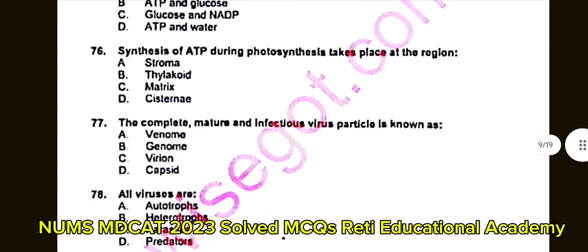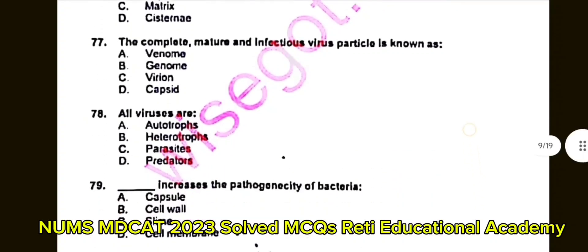Question number 77: The complete, mature, and infectious virus is known as? A. Venome. B. Genome. C. Virion. D. Capsid. The correct answer is C: Virion.